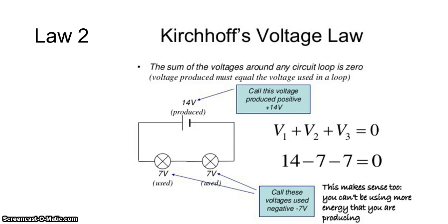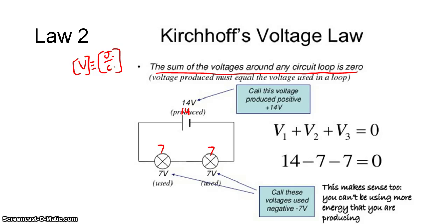The second law is: the sum of the voltages around any closed loop is zero. When we think of voltage, we think of joules per coulomb. In our pretzel demonstration, you picked up 14 pretzels at the battery — 14 pretzels per person — and by the time you get back to the battery, you need to have no more pretzels left. So, if you dropped off 7 pretzels at one resistor and 7 at another with identical resistors — or 10 and 4 with different resistances — the key concept is: if I pick up 14, I've got to drop off all 14 by the time I get back to the battery.